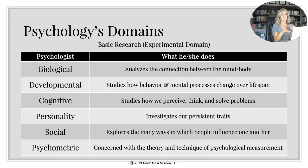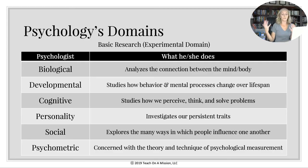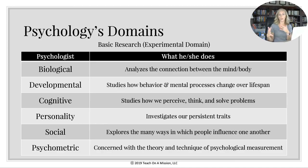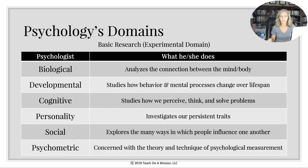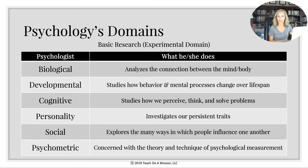Biological is all about the mind, body, and physical stuff. Developmental is looking at stages over the lifespan. Cognitive is perception — how we perceive, think, and solve problems. Personality is investigating persistent traits — there's a lot of nature versus nurture in that as well. Social explores the many ways people influence one another — socioeconomic and ethnic groups. Psychometric involves the theory and technique of psychological measurement — anything that has to do with testing, whether psychologically involved or not.